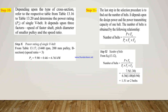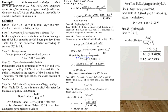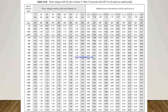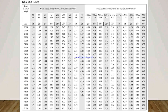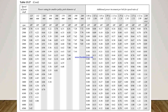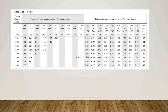The last step is to find the number of belts, which depends on the design power and the power transmitting capacity of one belt. The number of belts = (P × FA) / (PR × FC × FD). Substituting all values, we get the number of belts = 1.51, which means 2 belts are required. The relevant reference tables used are 13.15, 13.16, 13.17, 13.18, 13.19, and 13.20. Thank you.